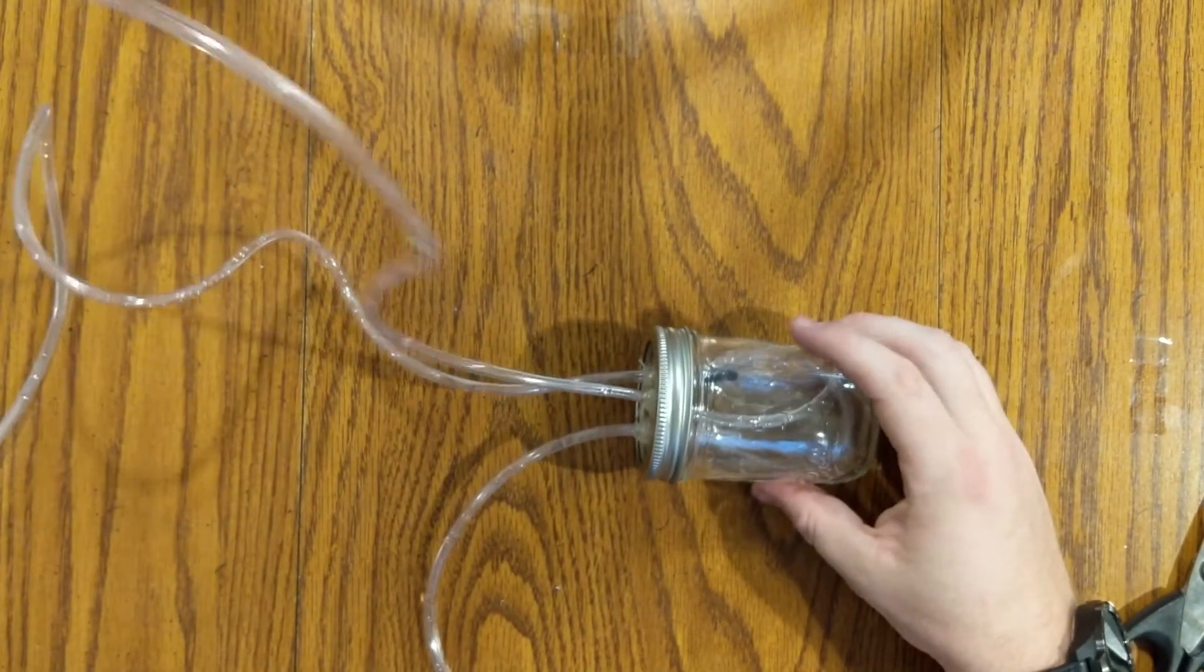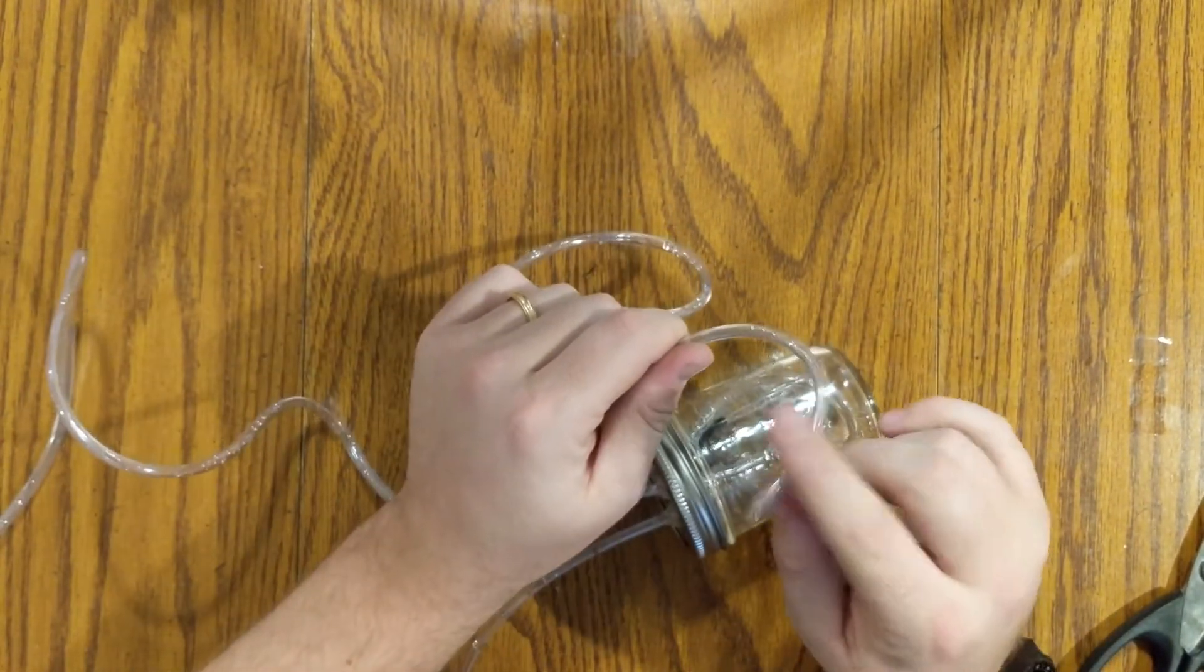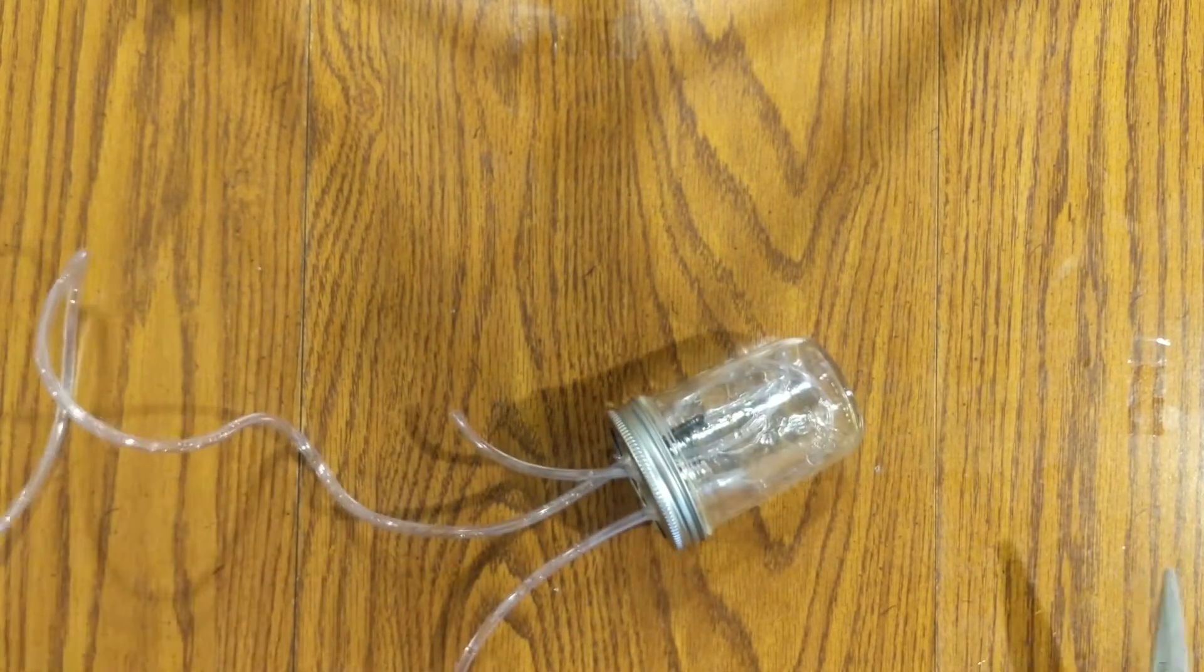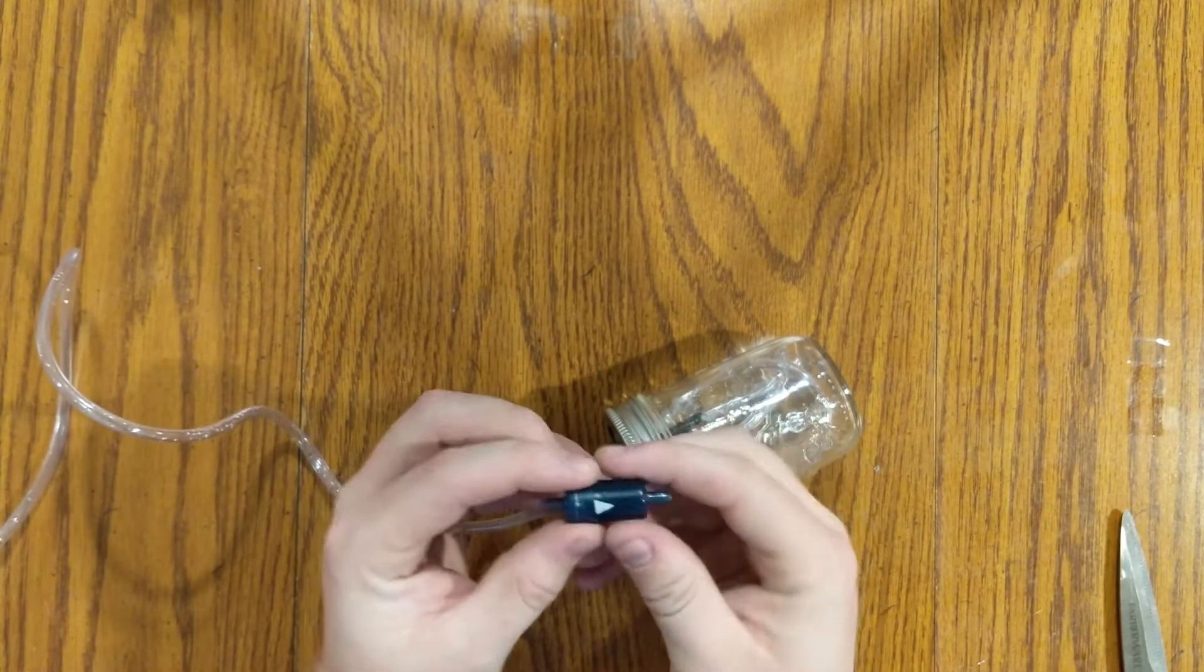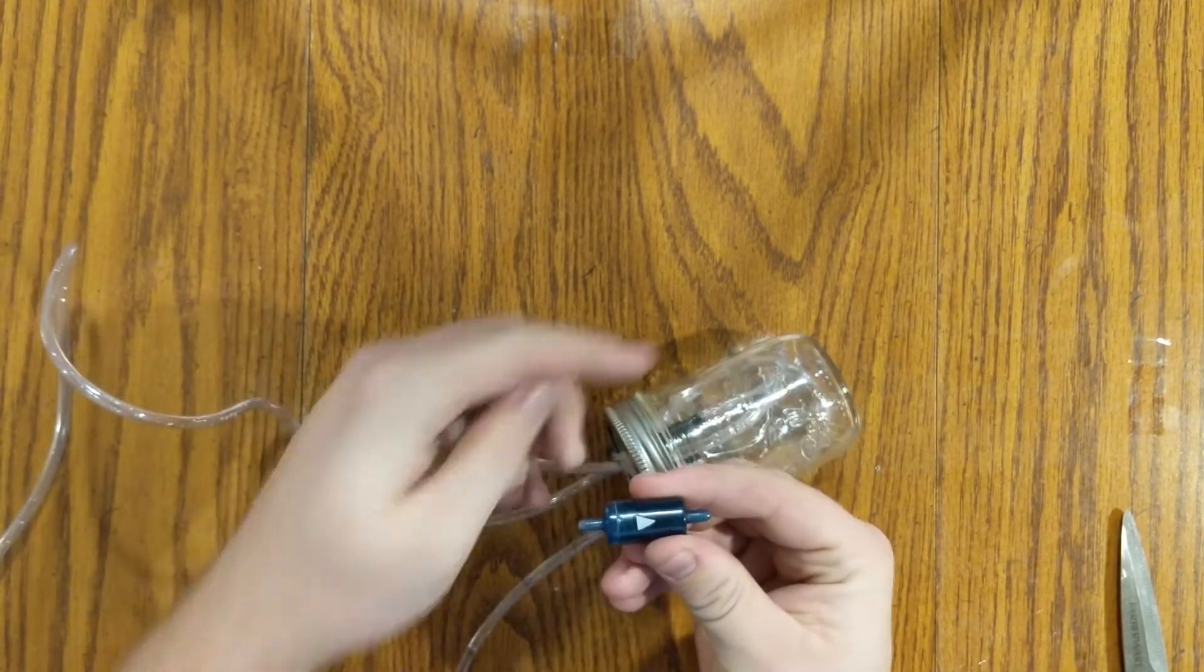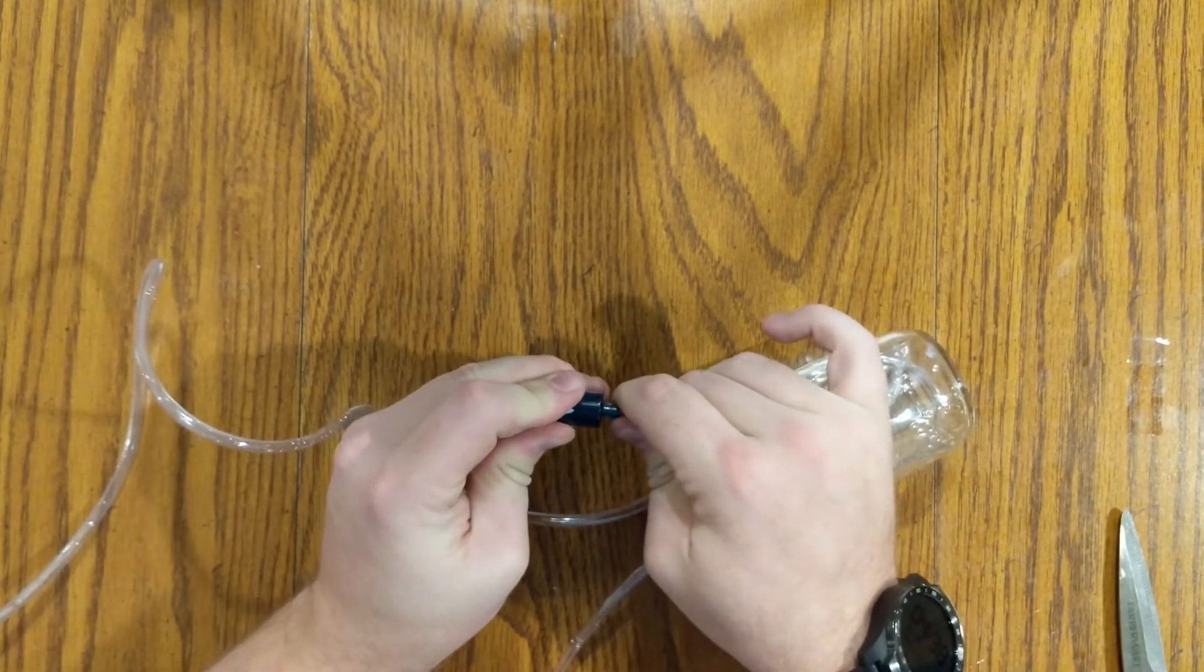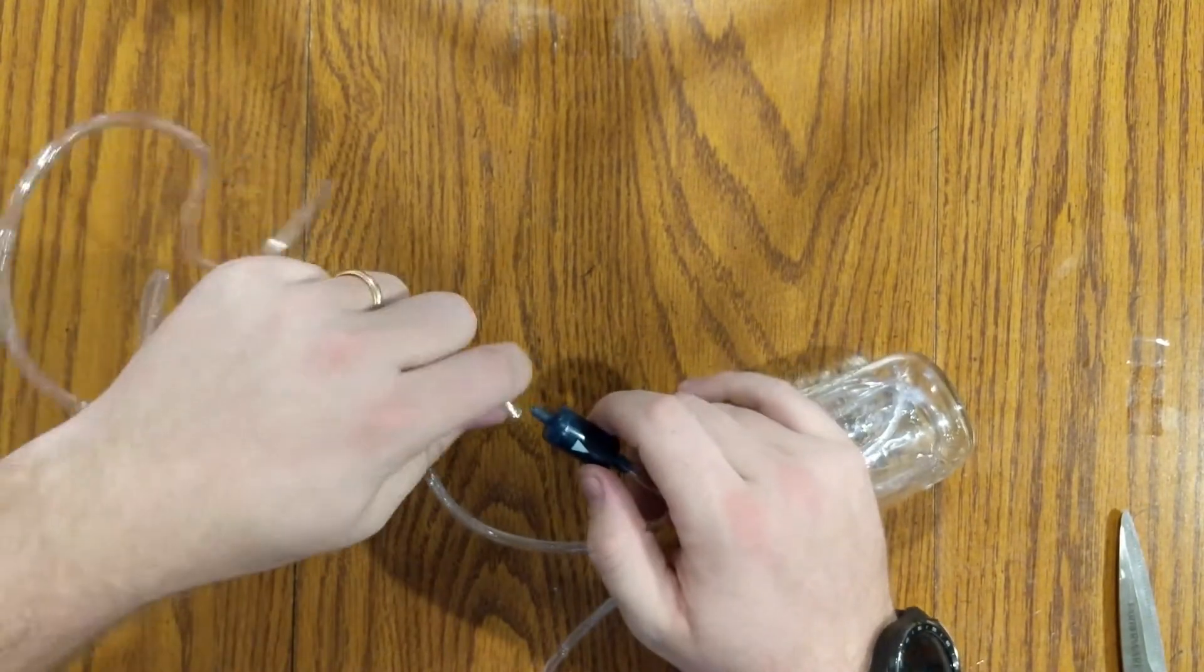So the hose without the T on it is the hose that will be going into our pump. Take a pair of scissors and cut it just above the lid. This is where we'll place our check valve. We need to make sure that our orientation is going into the jar and not the other direction. The check valve will keep the air from pushing the water out the wrong hose.